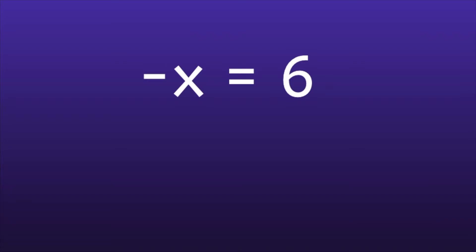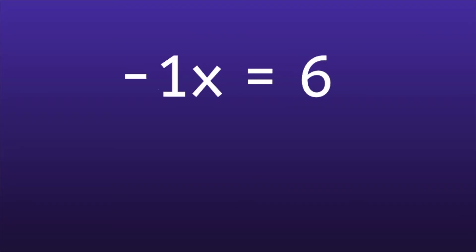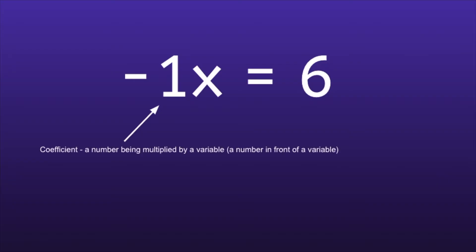So how do we go about simplifying this equation even more? It's important to note that there's an invisible number in front of that x, and that invisible number is a 1. So now, since I have negative 1x is equal to 6, I can move forward with simplifying. It's important to note that that negative 1 is called a coefficient, and a coefficient is a number being multiplied by a variable.